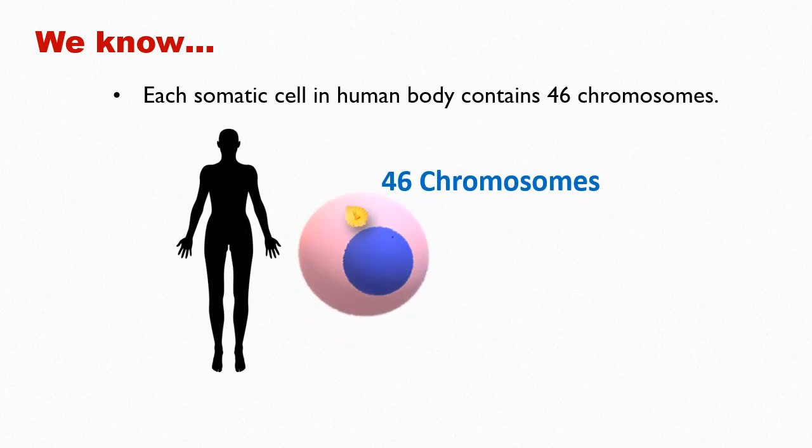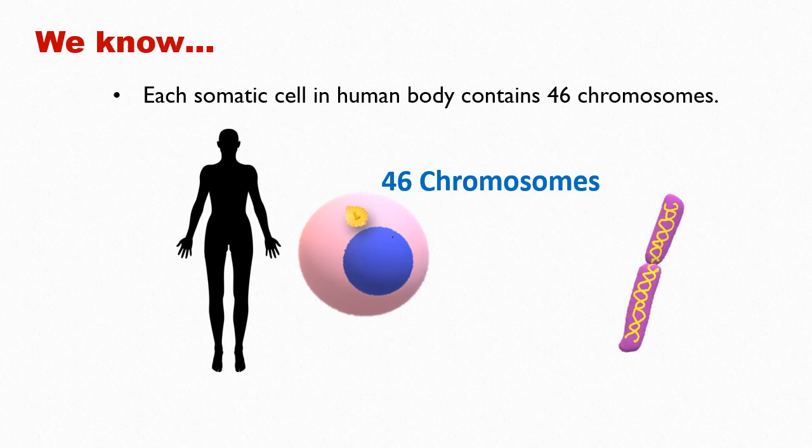Let us first recall some very important concepts that we covered in previous video lectures. Each somatic cell in the human body contains 46 chromosomes. Each chromosome represents a single, linear double-stranded DNA molecule.